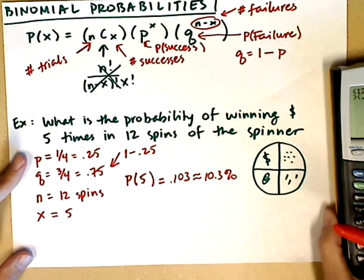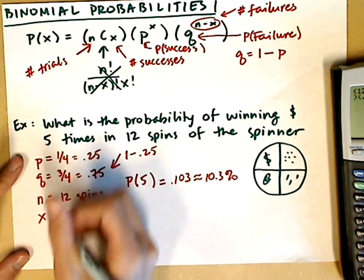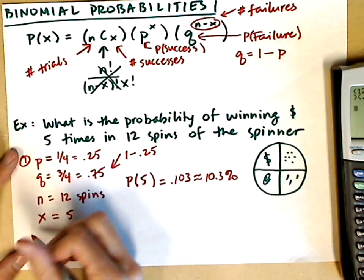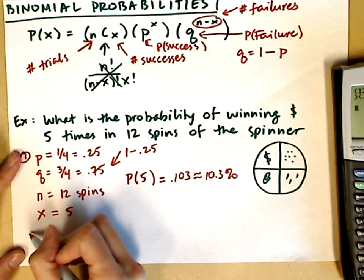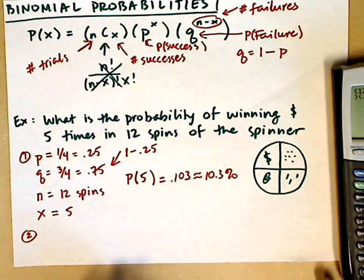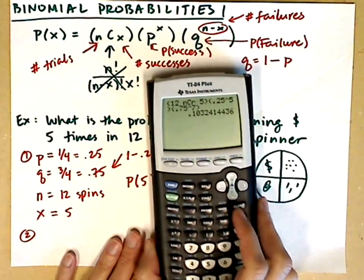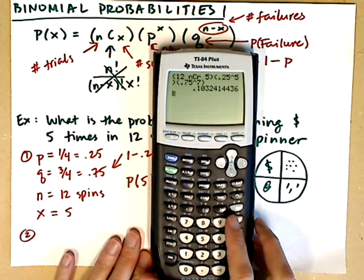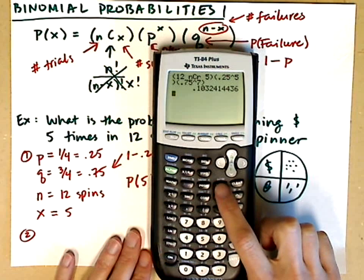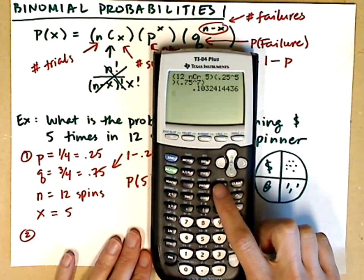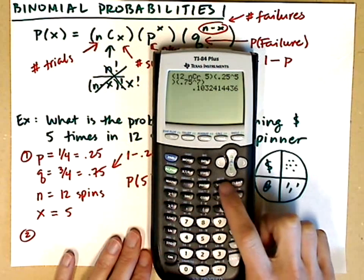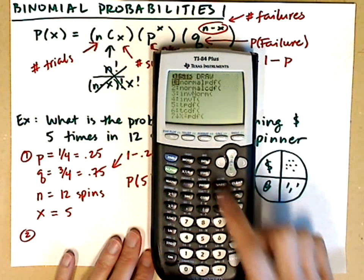Now there's one other way to compute this using the calculator: the binomial probability distribution function. We're going to use the same information but compute it through the distribution menu. To do it this second way, go into the distribution menu — it's in blue, kitty-corner from the arrows on the VARS key. So press Second, then VARS, to get the distribution menu.